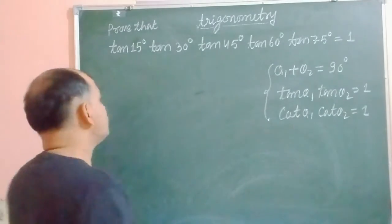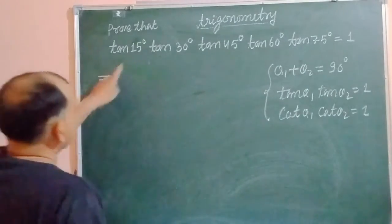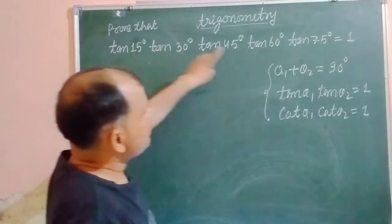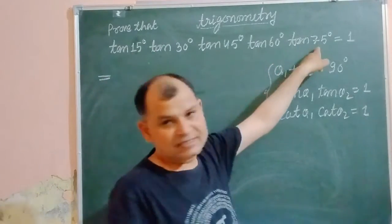So in this question we have 15 plus how much? 75 is 90.